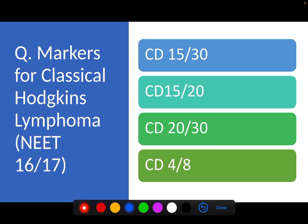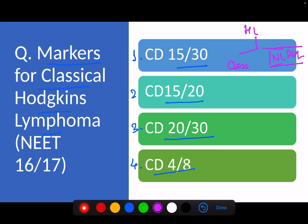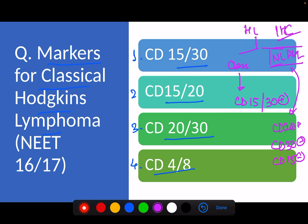The first question was asked in NEET 2016 and 2017, so it has a higher probability of being asked again because it has been repeated. The question is: the markers for classical Hodgkin's lymphoma are — option one CD15 and 30, option two CD15 and 20, option three CD20 and 30, option four CD4 and 8. As discussed previously, Hodgkin's lymphoma is divided into classical Hodgkin's lymphoma and nodular lymphocyte predominant Hodgkin's lymphoma. The classical variant is characterized by CD15 and CD30 positivity, while NLPHL is CD20 positive but negative for CD30 and CD15. The answer is the first option: CD15 and 30.